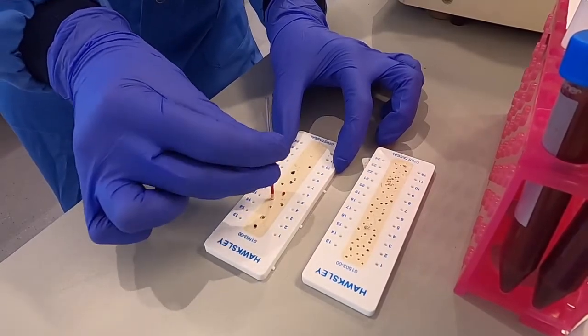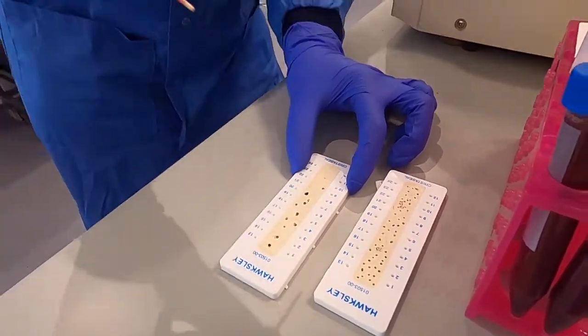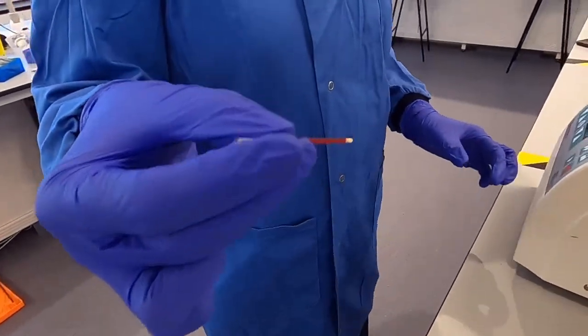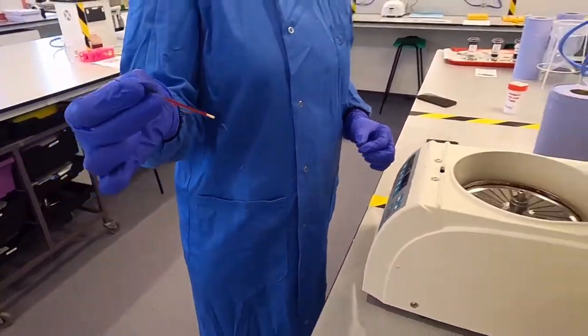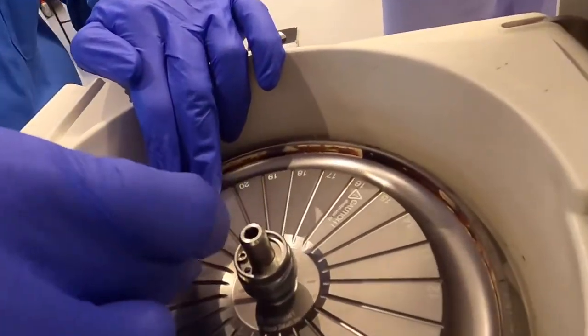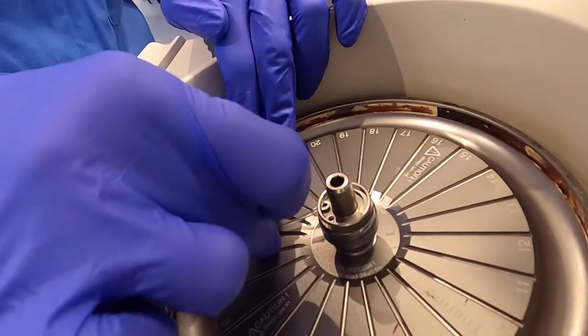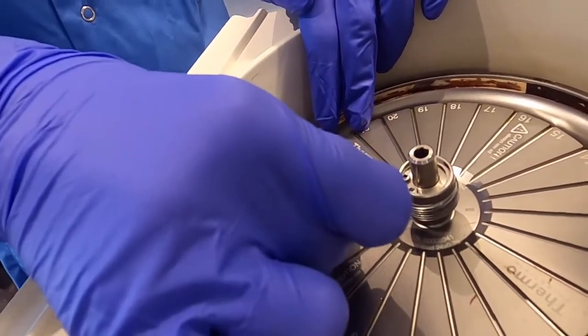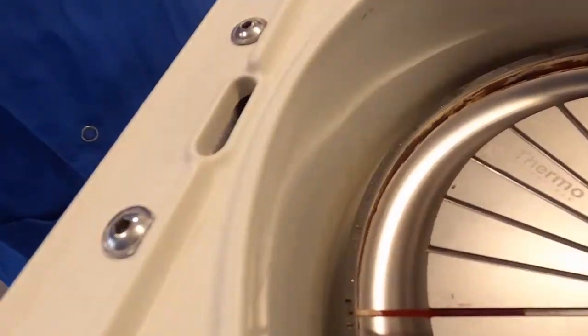Do that a second time and then you have a capillary tube that you can then pop in the centrifuge. We start at position one, the seal goes on the outer rim and you need to put that into the slot.